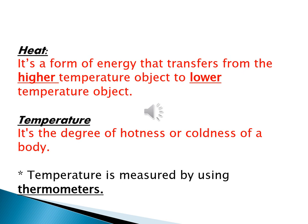You studied before that heat is a form of energy. So let's now know what's meant by heat. Heat is a form of energy that transfers from the higher temperature object to the lower temperature object. Now let's know what's meant by temperature. If we are talking about a hot object, we say it has high temperature, and if we are talking about a cold object, we say it has low temperature. So temperature is the degree of hotness or coldness of the body, and it can be measured by using a thermometer.